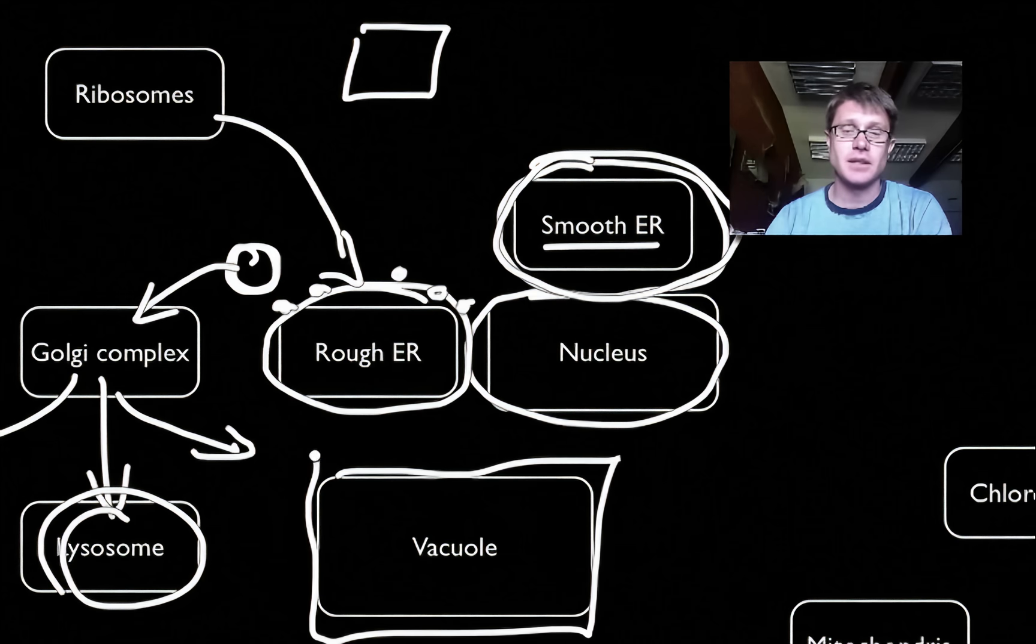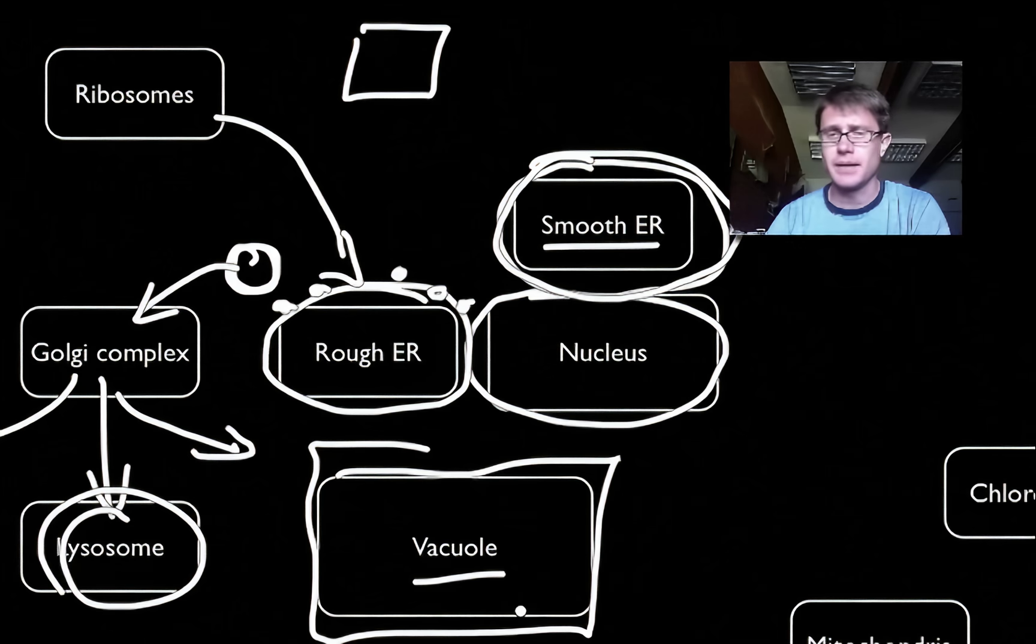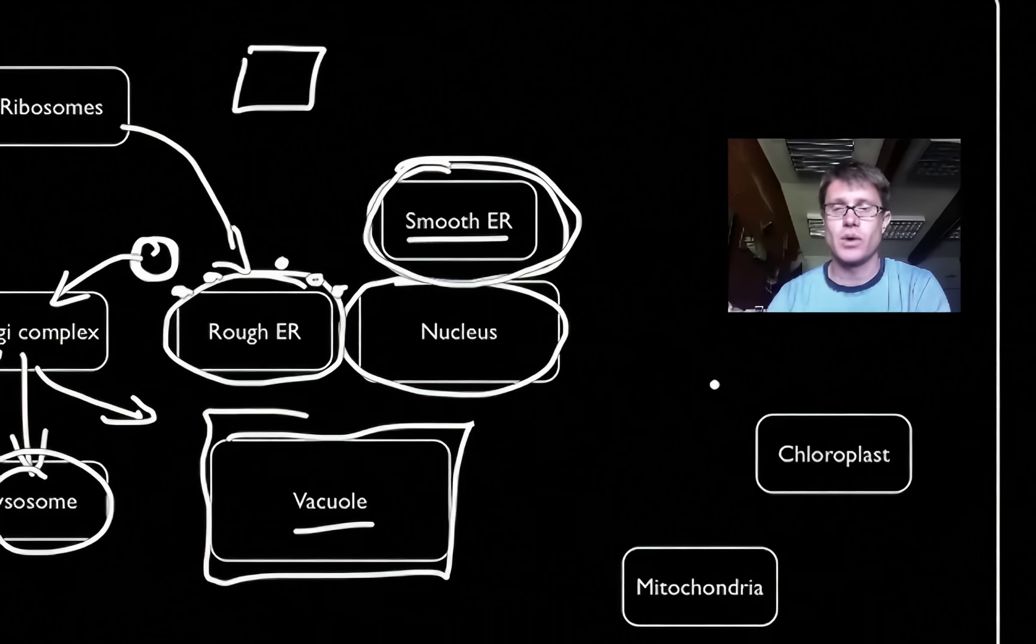Another portion of, especially plant cells, is the vacuole. Vacuole is important in storage. For example, all plant cells have a central vacuole. It's going to allow them to regulate their amount of water.